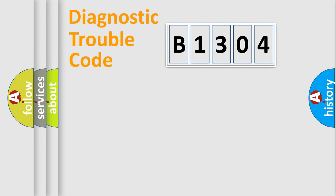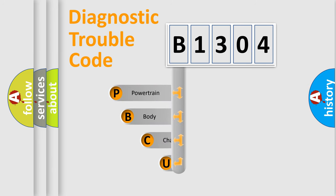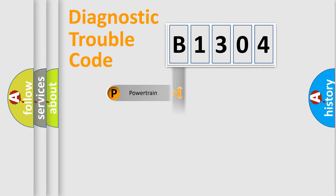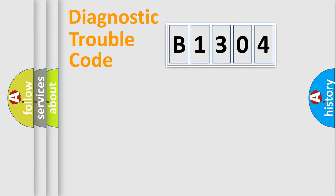Let's do this. First, let's look at the history of diagnostic fault code composition according to the OBD2 protocol, which is unified for all automakers since 2000. We divide the electric system of an automobile into four basic units: Powertrain, Body, Chassis, and Network.